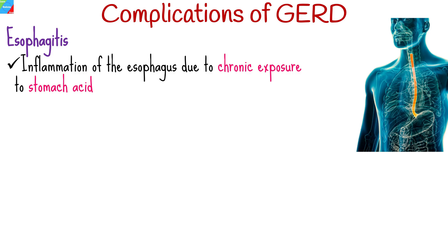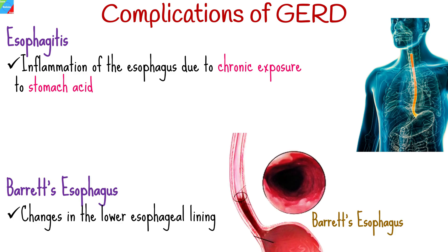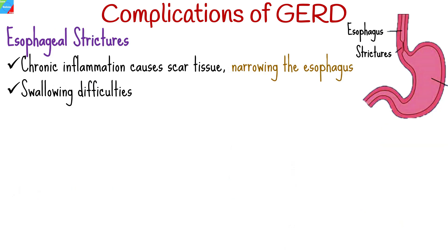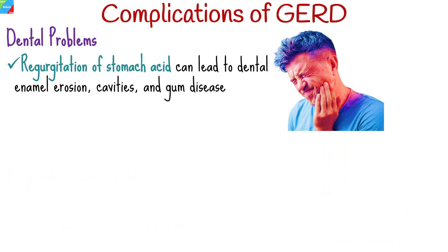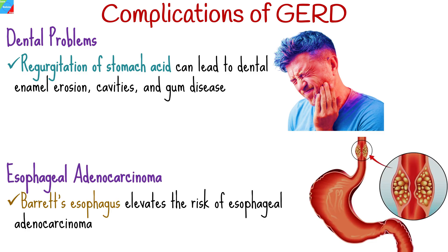Untreated GERD can lead to serious complications including esophagitis, which is inflammation of the esophagus due to chronic exposure to stomach acid, causing pain and potential ulcer formation. Barrett's esophagus results from long-term inflammation leading to changes in the lower esophageal lining, increasing the risk of esophageal adenocarcinoma. Chronic inflammation causes scar tissue narrowing the esophagus, resulting in swallowing difficulties. GERD also contributes to respiratory issues like asthma exacerbations, chronic cough, and pneumonia due to stomach content aspiration. Regurgitation of stomach acid can lead to dental issues including enamel erosion, cavities, and gum disease.